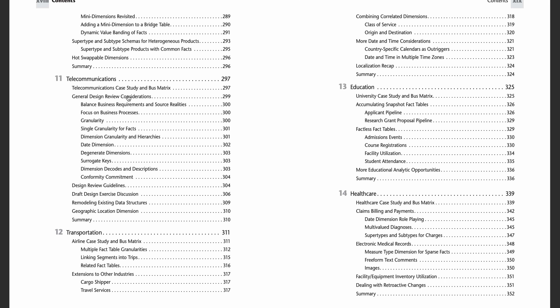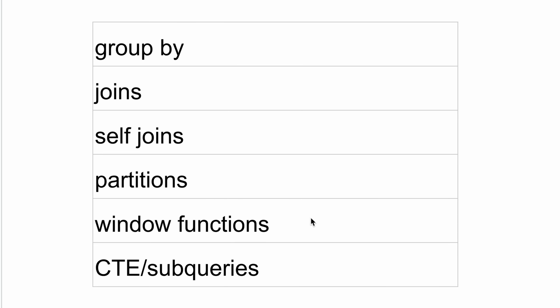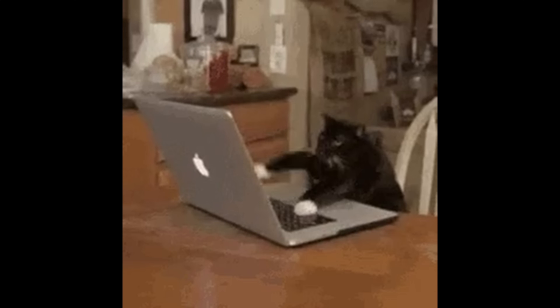The more data model examples you go through, the better you'll become. After creating the data model, you'll be asked SQL questions on that same model — mostly three to five questions, incremental in difficulty. They start with a simple GROUP BY, then move to joins, self-joins, window functions, subqueries, and CTEs. You'll have to write three to five SQLs within 10 to 15 minutes, so you need to be really quick.